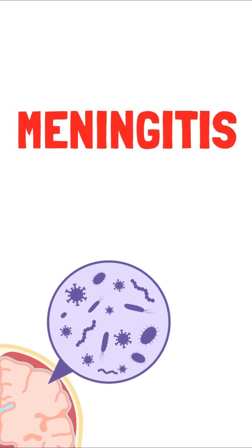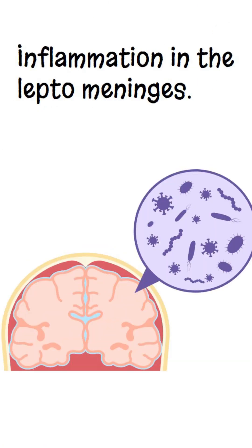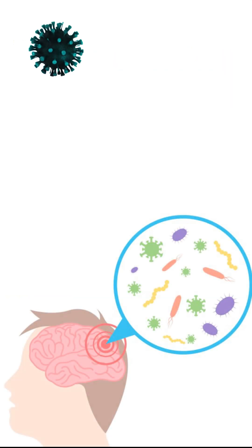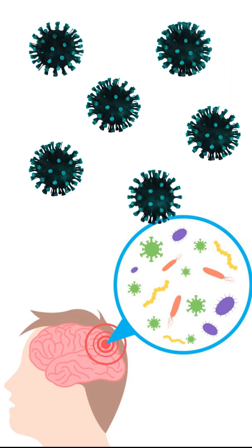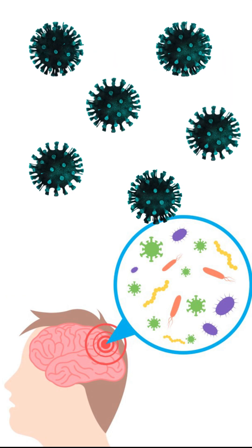Let's go through meningitis in 60 seconds. Meningitis is the inflammation of leptomeninges, and it occurs because a particular pathogen penetrates the blood-brain barrier and proliferates in the cerebrospinal fluid.